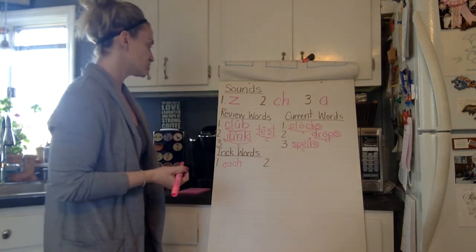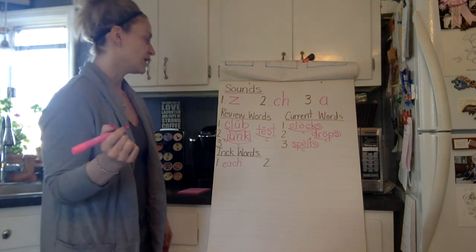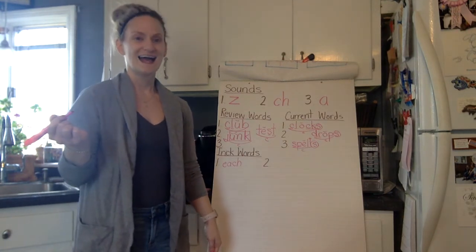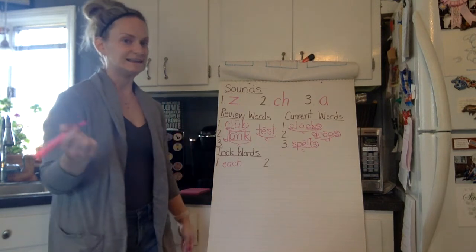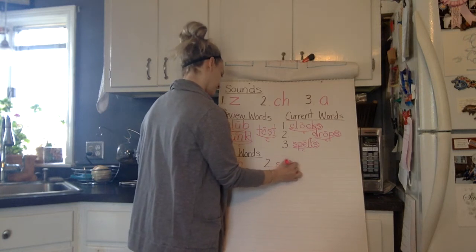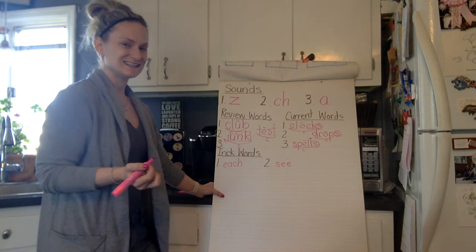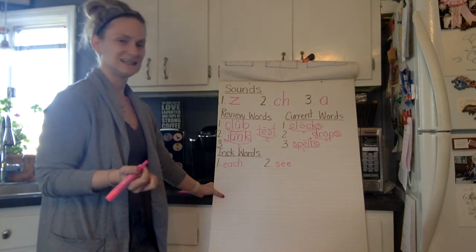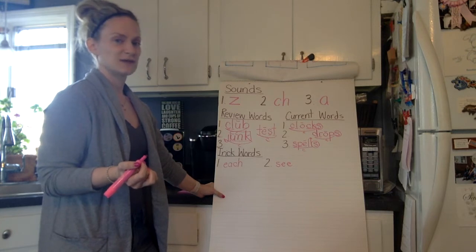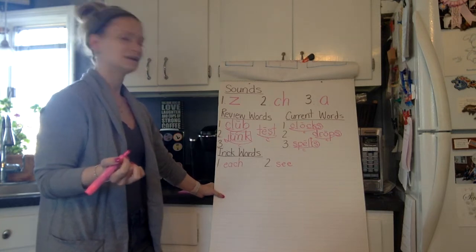All right, trick word number two. See. See. Let's spell the word see together first before we write it. Here we go. S-E-E. Write the word see next to number two. Again, we have that long E sound because of the E-E vowel team. And let's spell it together one more time. How do you spell see? S-E-E. Nice work.